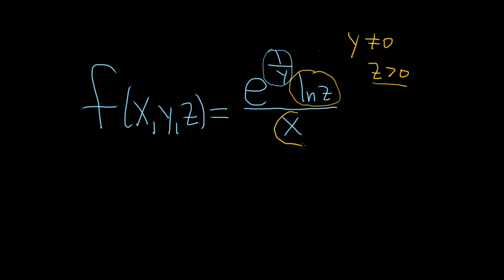On the bottom, the only restriction here would be that we can't divide by 0, because we're not allowed to have 0 on the bottom of a fraction. So x cannot be equal to 0.